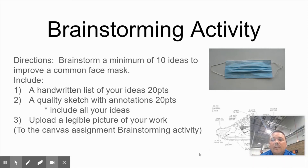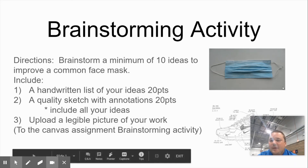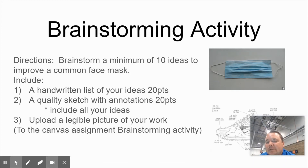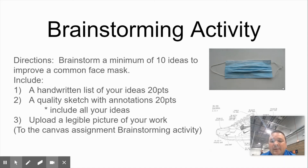You are going to brainstorm a minimum of 10 ideas to improve a common face mask. In the upper right-hand corner there's a picture of a basic face mask. You're going to utilize the brainstorming techniques and rules we talked about, and you will provide a handwritten, neat, legible list — preferably in pen — of a minimum of 10 ideas to improve that face mask.